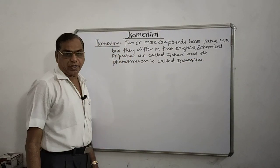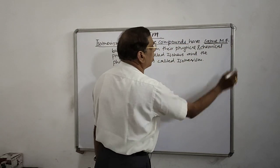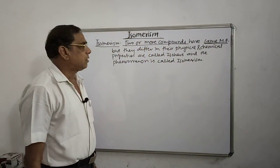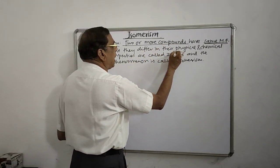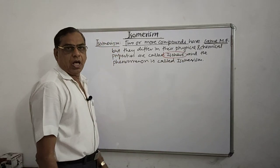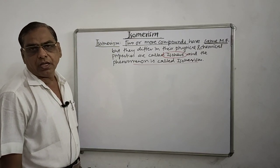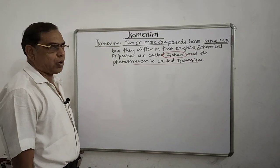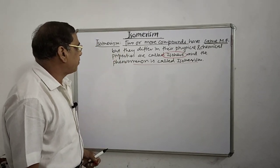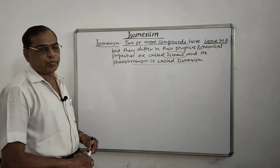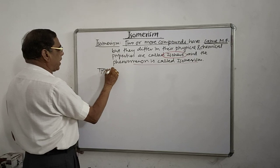So here is the definition of isomerism: two or more organic compounds have the same molecular formula but differ in their physical and chemical properties — these are called isomers and the phenomenon is called isomerism. This is a very important concept when solving numerical problems based on chain reactions in JEE or similar exams.